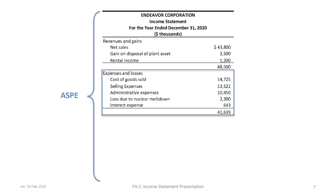Next, after revenues and gains, we have a section for expenses and losses. Notice that cost of goods sold is reported as part of all expenses and losses, and there is no gross margin disclosure — we will see that in a multi-step statement. There is no prescribed order to present revenues and expenses; however, common practice is to present in order based on dollar value, or sometimes alphabetically. In our example, we have cost of goods sold of $14,725,000, selling expenses, administrative expenses, a loss due to a nuclear meltdown, and interest expense, giving total expenses and losses of $41,639,000.